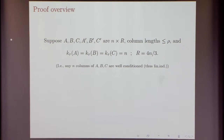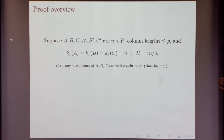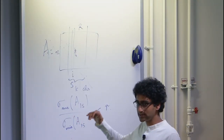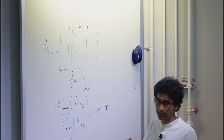Let me give a brief overview of the proof. I'll assume simplifying assumptions: you have n×R matrices A, B, and C in the decomposition, with Kruskal ranks exactly equal to n. That means if you take any n columns of these n×R matrices — where R is slightly bigger than n — they are linearly independent in a strong way, with condition number at least 1/poly(n).